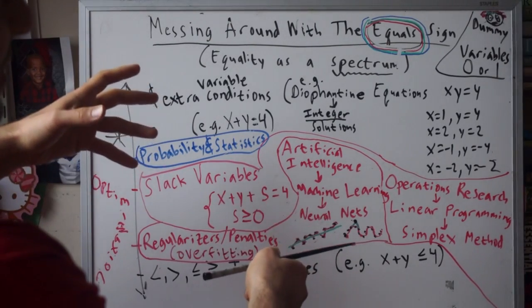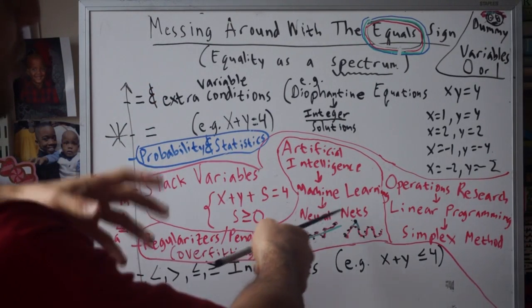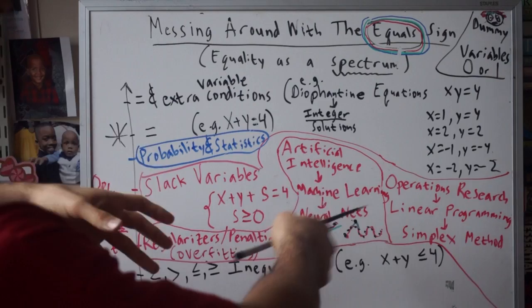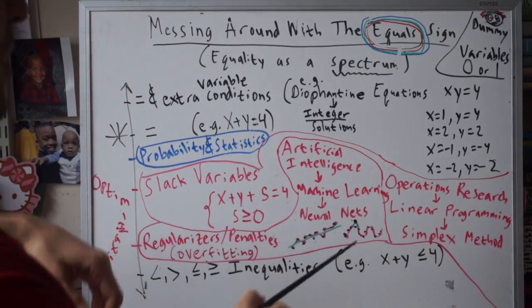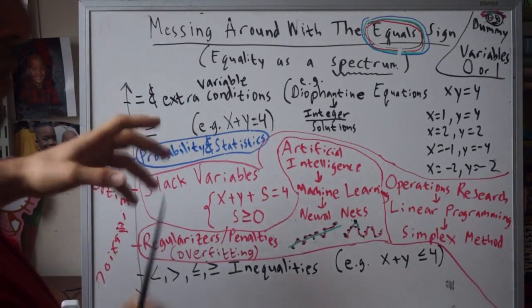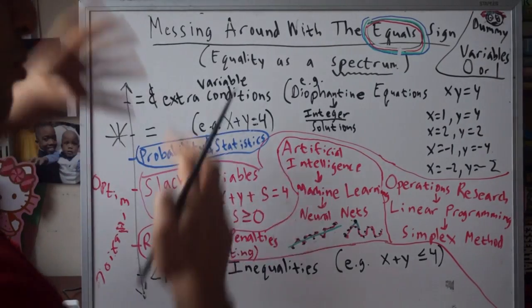The point is, I'm just throwing this out now. This stuff is part of a really popular area now: neural nets, neural networks, which are part of machine learning, which is part of artificial intelligence. All these software companies—Google, Facebook—all that stuff.